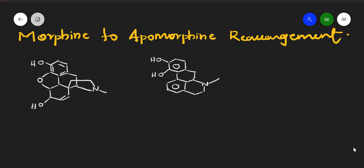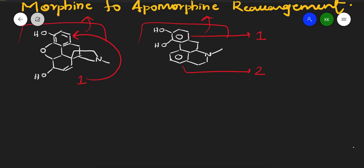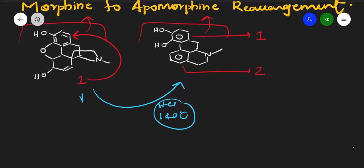Welcome to this class. In this video we are going to discuss the morphine to apomorphine rearrangement. On the left side is the structure of morphine, and on the right side is the structure of apomorphine. In morphine we have only one aromatic ring, whereas in apomorphine we have two aromatic rings. This reaction happens when we add HCl at 140 degrees Celsius to morphine to get apomorphine.